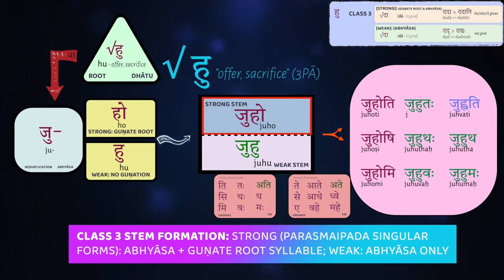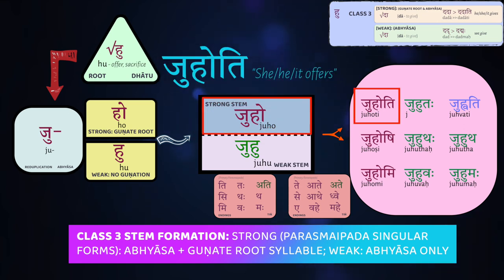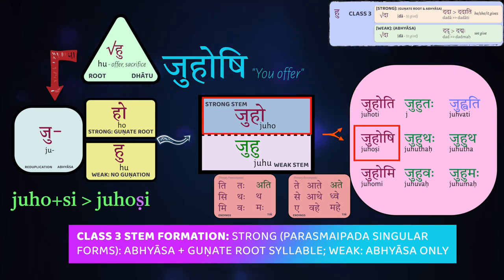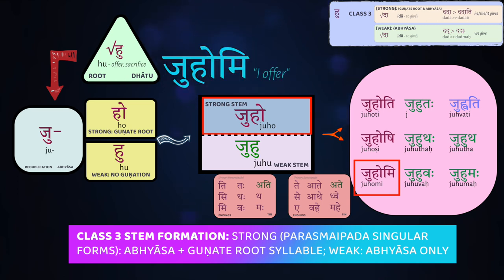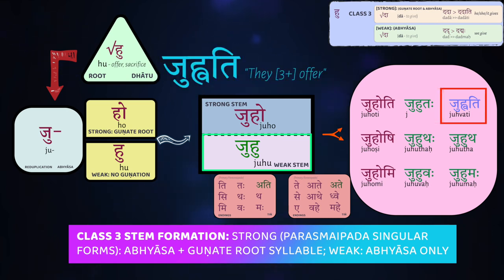We add our singular parasmaipada endings to the strong stem to get juhoti — 'he, she, it offers.' Juhoshi — 'you offer' — where the normal s sandhi rule is triggered by our o-kara. Then juhomi — 'I offer.' For all the other endings, we take the weak stem juhu: juhutaḥ — 'they both offer,' and juhvati — 'they three or more offer.'